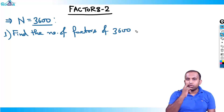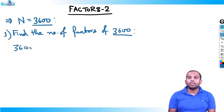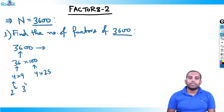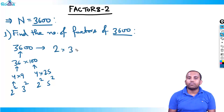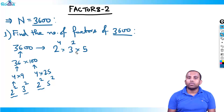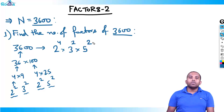Let's quickly break 3600 in mind. 3600 = 36 × 100 = 4 × 9 × 4 × 25. Now 4 = 2², 9 = 3², 4 = 2², 25 = 5². So the prime bases are 2, 3, and 5. Powers: 2 has power 2+2 = 4, so 2⁴; 3 has power 2, so 3²; 5 has power 2, so 5². Thus 3600 = 2⁴ × 3² × 5².